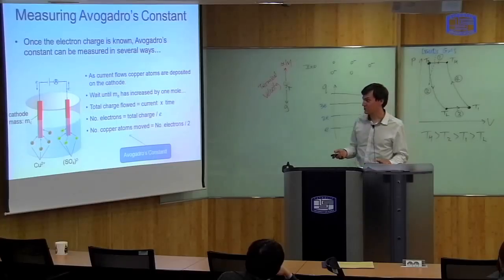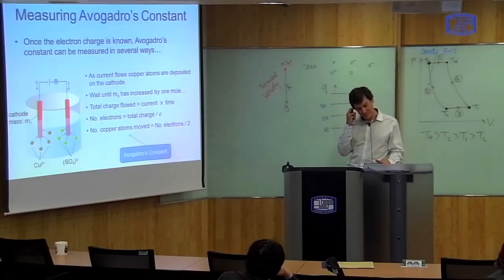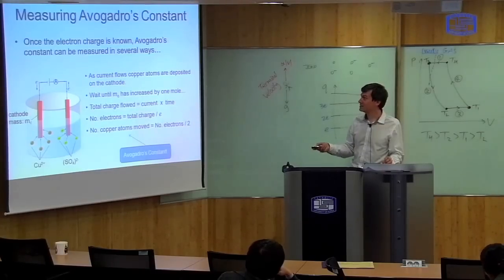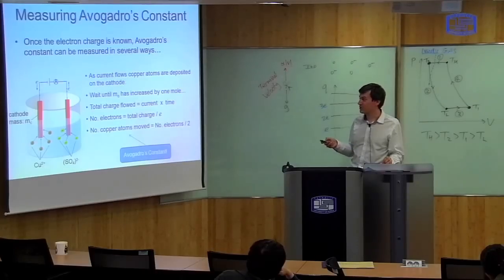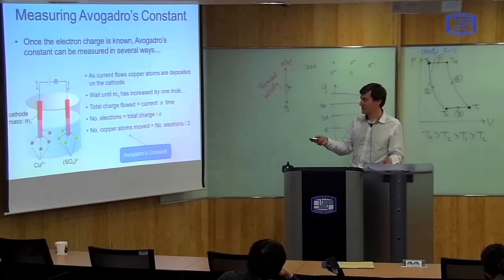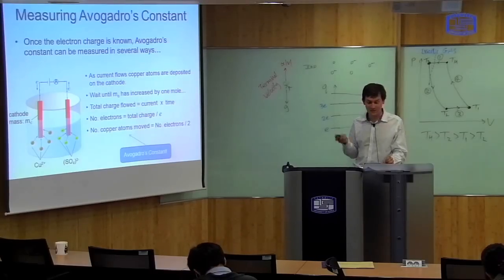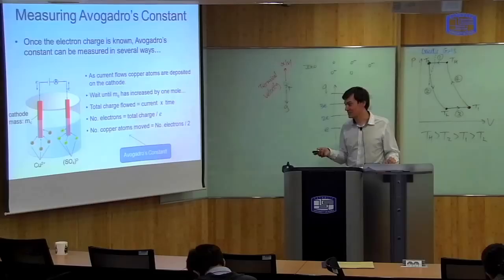Once you know the electron charge, it's quite easy to measure Avogadro's constant. This is one way — using an electrolytic cell. You have a circuit with a battery and current flowing, attached to two metal rods called electrodes, made out of copper in this example, which you put into water. But in order to go between the two forms of the ideal gas law, you need to know how many particles are in one mole.